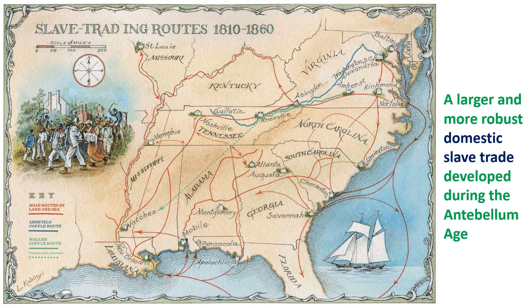With the constitutional ban on international slave trade taking effect in 1808, and with declining prices of slaves in the Chesapeake but higher prices in the southwest, a really robust domestic slave trade developed. In the upper South, much of the land was already owned and cotton production couldn't physically expand, but because the majority of slaves resided there and tobacco prices had dropped, the demand for slaves in the southwest resulted in a robust domestic slave trade between the upper South and the southwest.